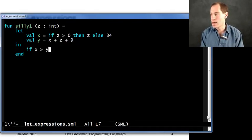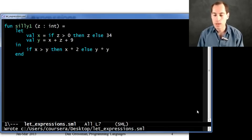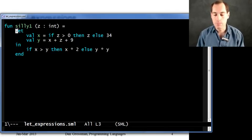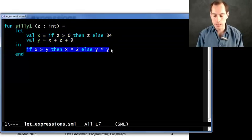And then our body can use x and y and z and everything else, so it could just be something like this. And now the type of this whole thing, silly one will end up having type int arrow int, because its body has type int.